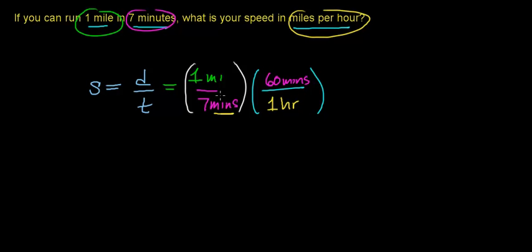So remember, you're essentially multiplying two fractions. And notice that this unit of minute cancels out with this unit of minute. And then what you're going to get on the bottom is a unit of an hour.